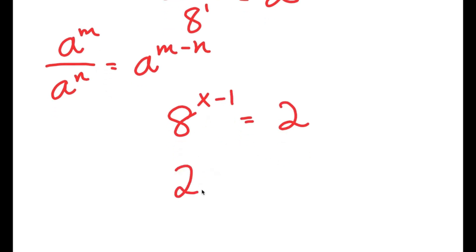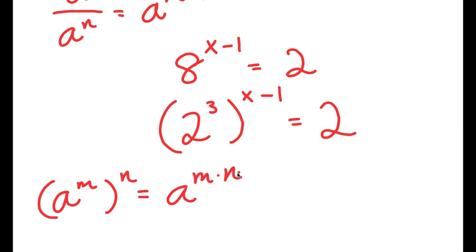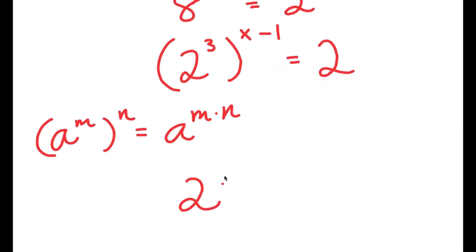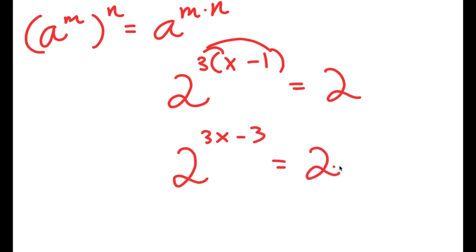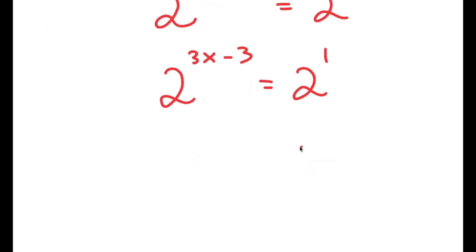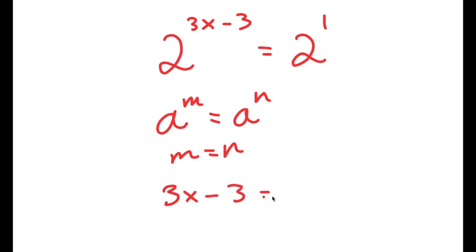Now, 8 is the same thing as 2 to the power of 3, so I get 2 to the power of 3, to the power of x minus 1, equals 2. Using the property that a to the power of m to the power of n equals a to the power of m times n, I get 2 to the power of 3 times (x minus 1). Distributing the 3 gives 2 to the power of 3x minus 3, equal to 2. And 2 is the same as 2 to the power of 1. Since the bases are equal, m equals n, so 3x minus 3 equals 1.